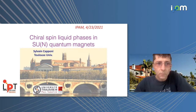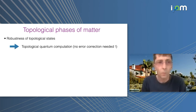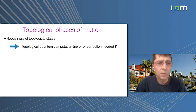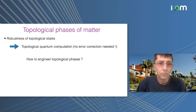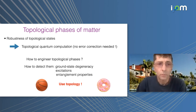In condensed matter theory it's very important to understand the phases of matter, in particular the most exotic ones such as topological phases of matter, which are very robust in the sense of topology. In particular, they could be useful for applications such as topological quantum computation, because you don't need any error correction. Of course you need to provide a recipe for how to engineer such topological phases, and also to probe them — to know how to detect them, using topology.